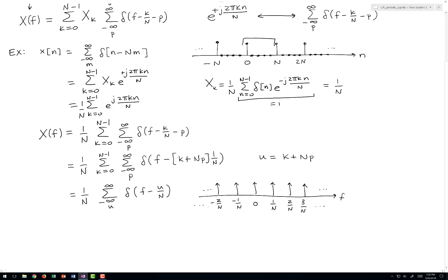And the important thing to notice is that the separation between these delta functions is 1 over N. Whereas in the time domain, the separation was equal to capital N samples. In the frequency domain, the separation is 1 over N cycles per sample.